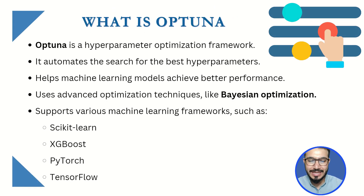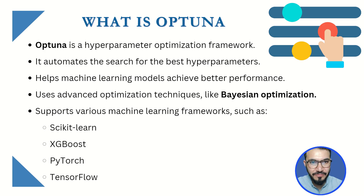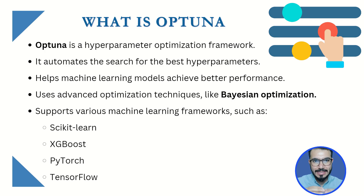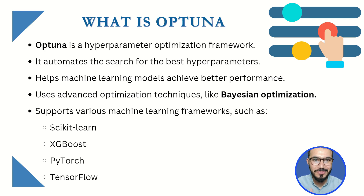Getting started with the topic — what is Optuna? What is this magic tool that can help us automatically fine-tune our hyperparameters? It is an optimization framework that can automatically fine-tune our hyperparameters based upon the principles of Bayesian optimization.